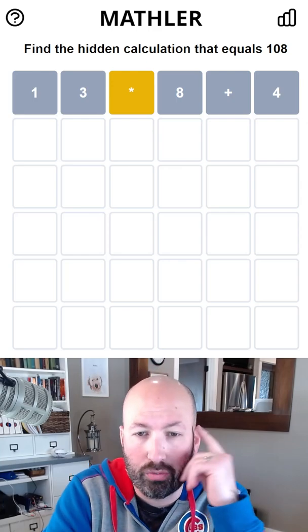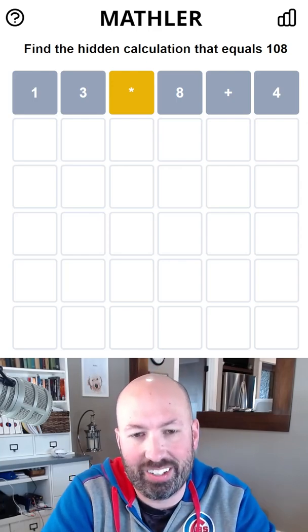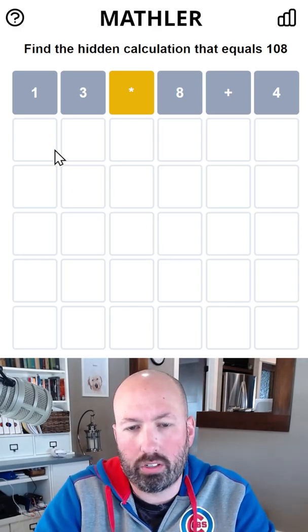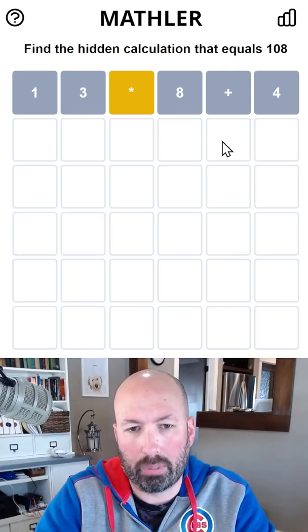Okay, so we don't have a 1, a 3, a 4, or an 8, or an addition. All right, so we are doing multiplication, and we know that we have to have at least one two-digit number because of the number of blanks we have.